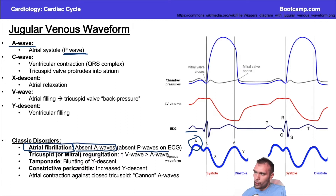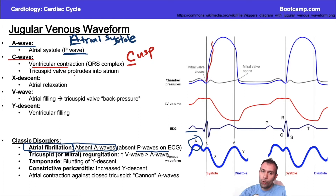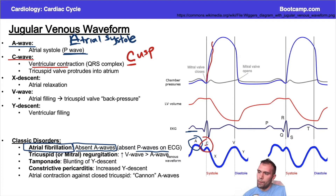For the C wave, I like to think of 'cusp' — as in the tricuspid valve. After ventricular contraction following the QRS, the right ventricle contracts and that pressure gets shunted upward. The tricuspid valve protrudes back into the atrium, and from the atrium's perspective you see a little bump — that's the C wave. So C can stand for 'cusp' (tricuspid valve) or 'contraction' (ventricular contraction).